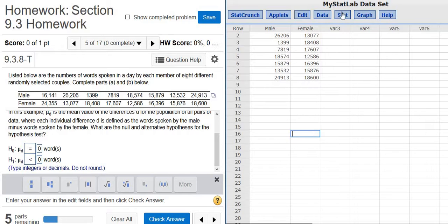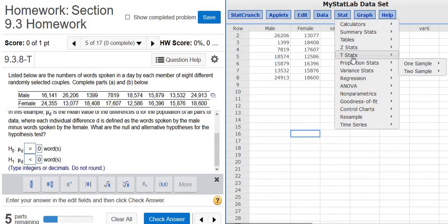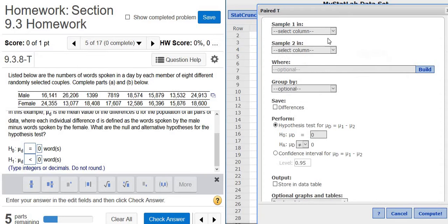And then in StatCrunch, you go to Stat, T, and then it's paired. Stat, T, and then paired. And then you left click. And then just pick the first thing and pick the second thing. And then just change this to less than zero.